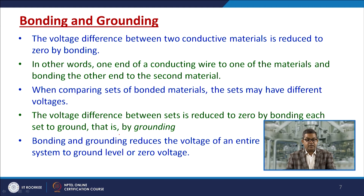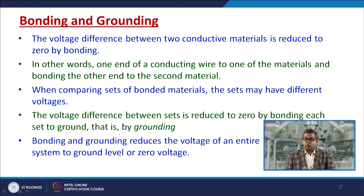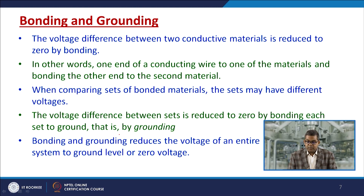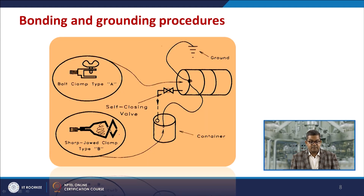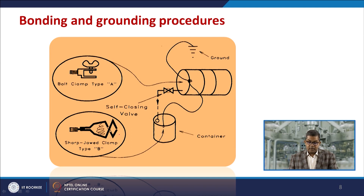Bonding and grounding is another important aspect. The voltage difference between two conductive materials is reduced to zero by bonding them together — connecting one end of a conducting wire to one material and the other end to the second material. When comparing sets of bonded materials, the voltage difference between sets is reduced to zero by bonding each set to ground, which is grounding. Together, bonding and grounding reduce the voltage of an entire system to ground level, or zero voltage.